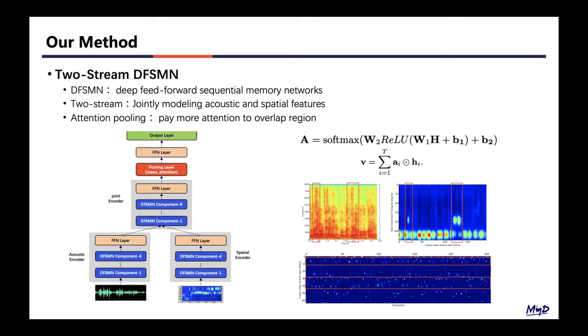In this work, our purpose is not to compare the effectiveness of different neural structures for OSD tasks, but to investigate how to effectively model acoustic and spatial features. Especially, we come up with a two-stream deep DFSMN with pooling layers for jointly modeling acoustic spatial features.